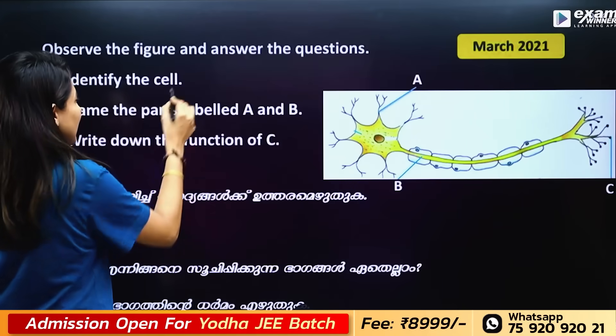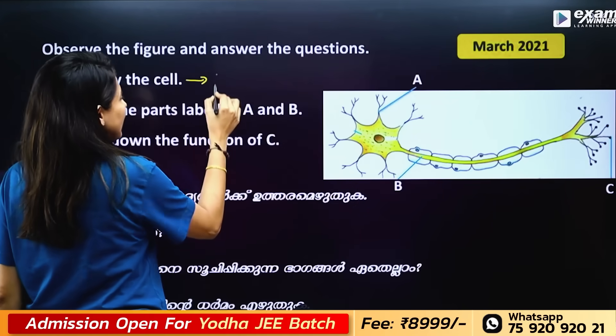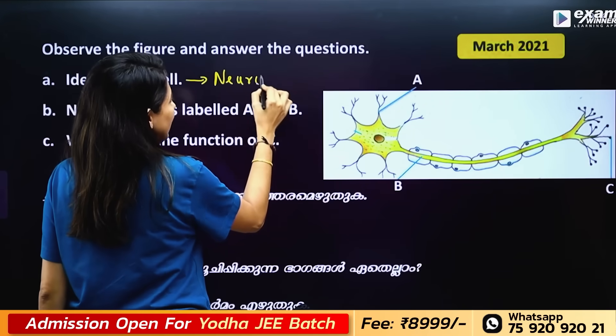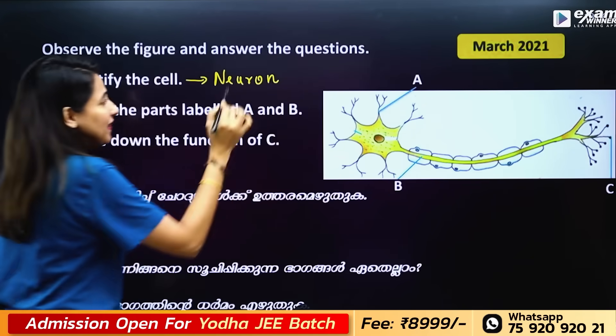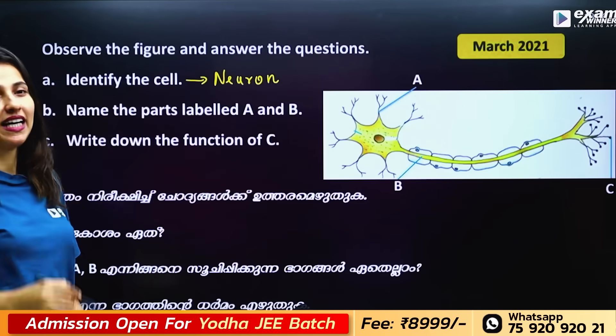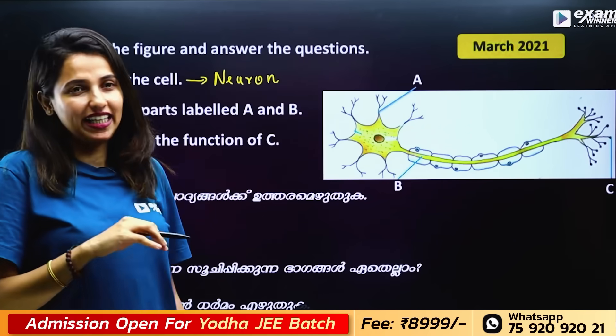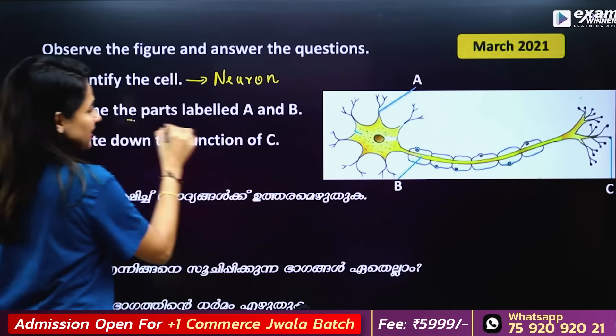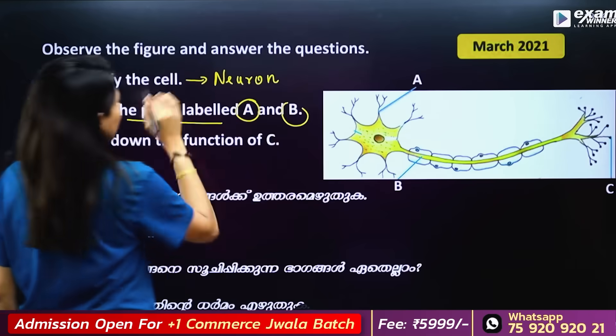Identify the cell. This is the neuron — we call it the nerve cell. Name the parts labeled A and B.